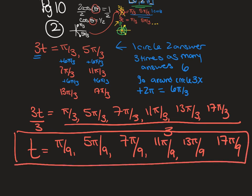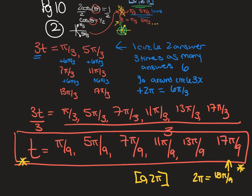A quick note: our answers are over 9, so 2π with denominator 9 is 18π/9. The largest answer, 17π/9, is smaller than that, so it fits within the restriction of 0 to 2π. Dividing by 3 shrunk all the answers and made them fit inside one circle.